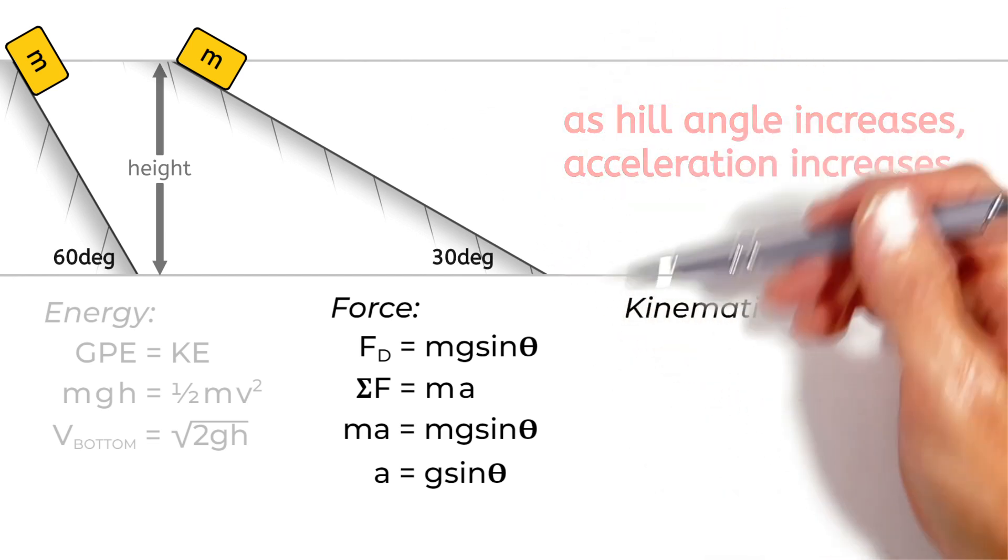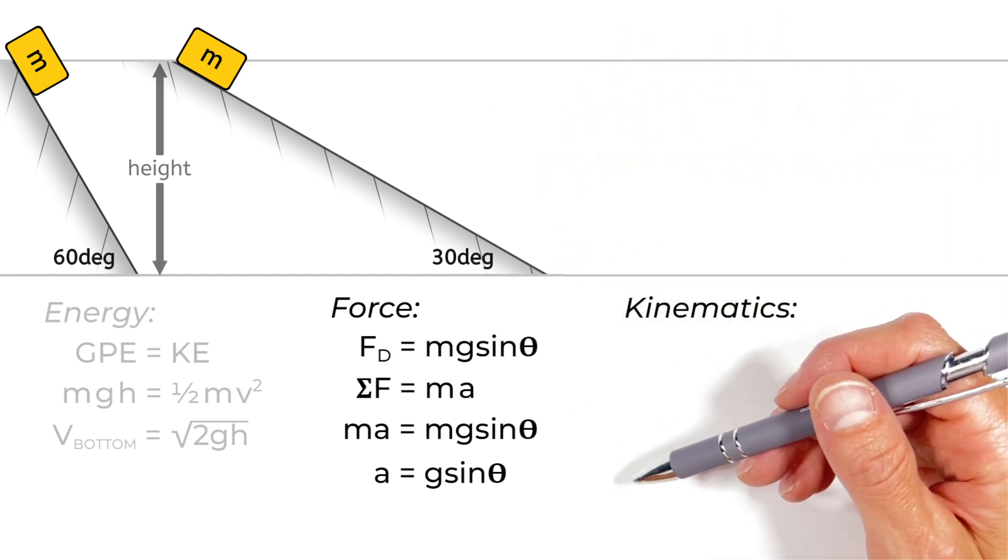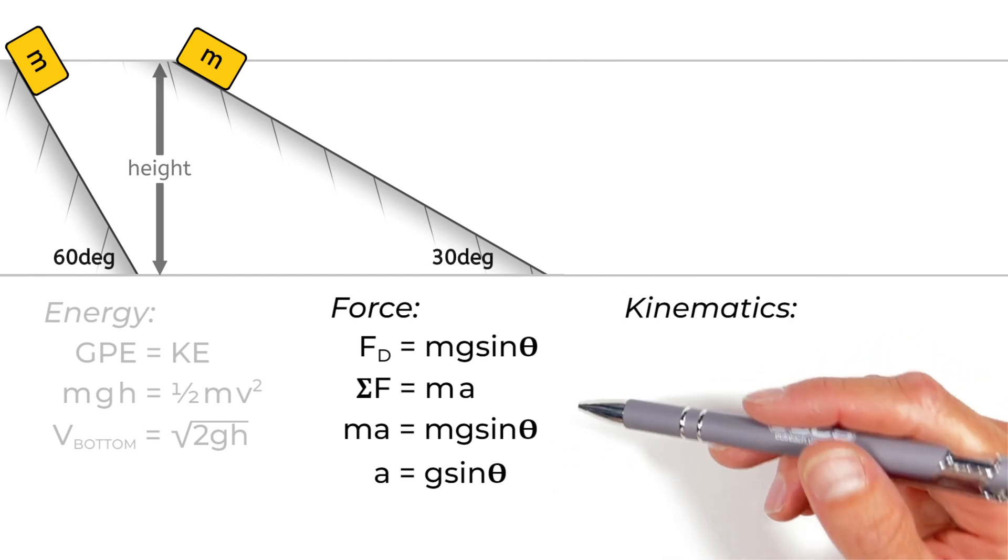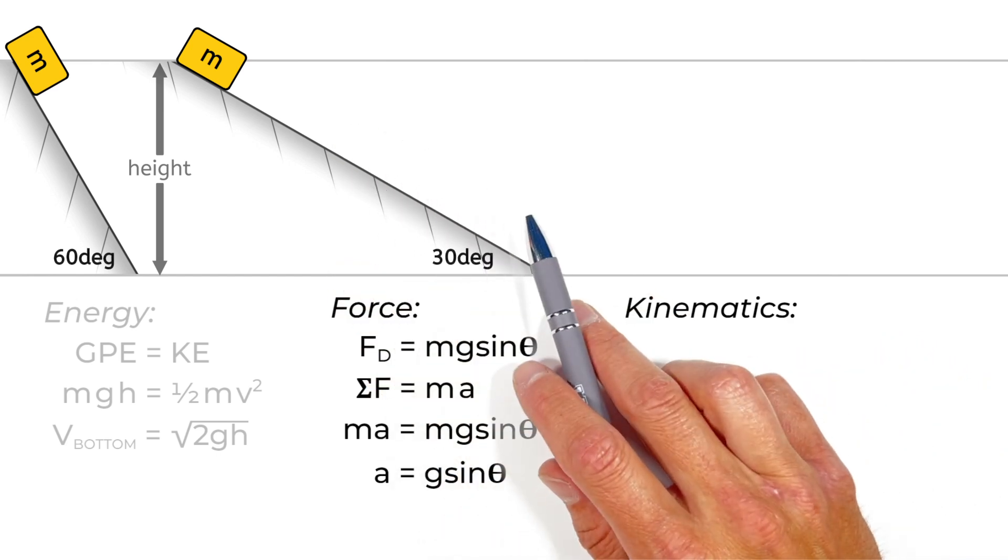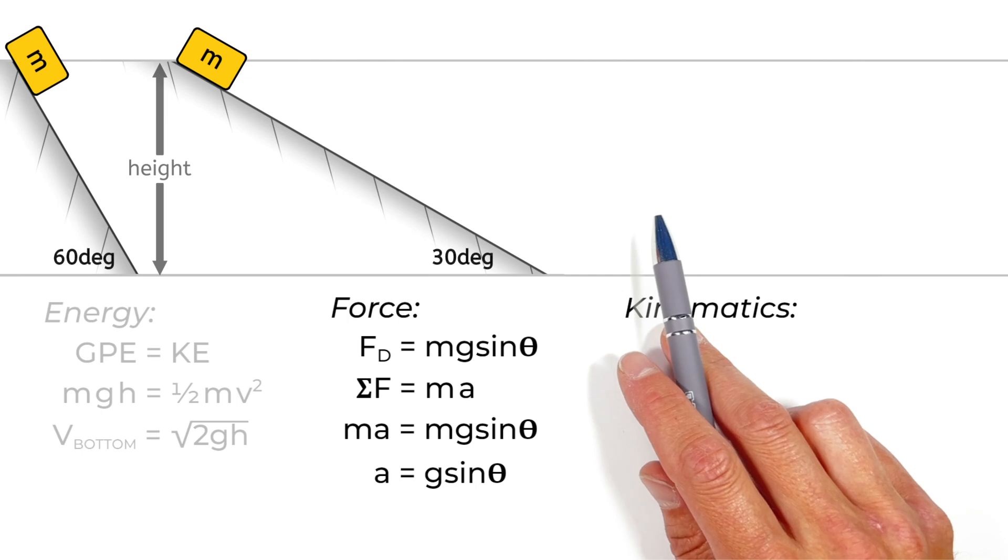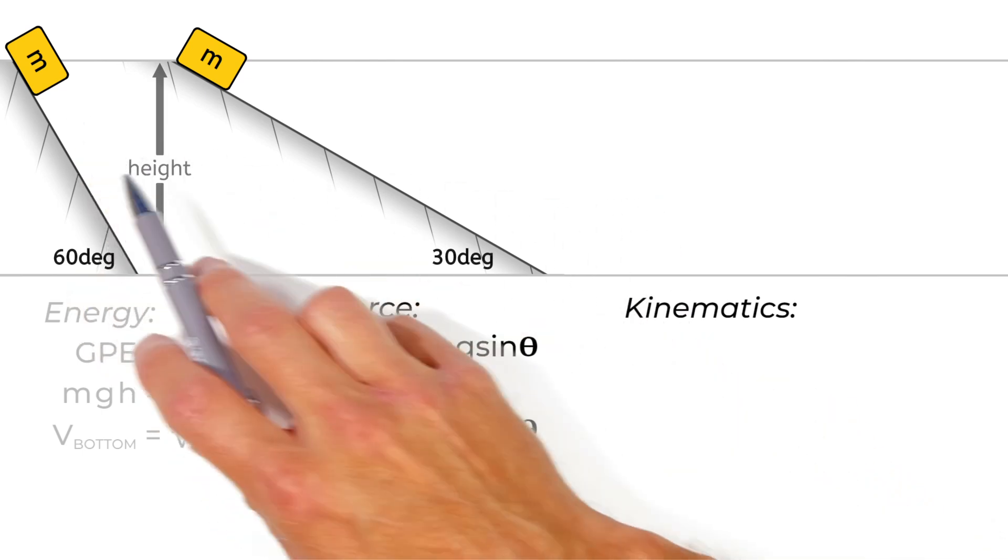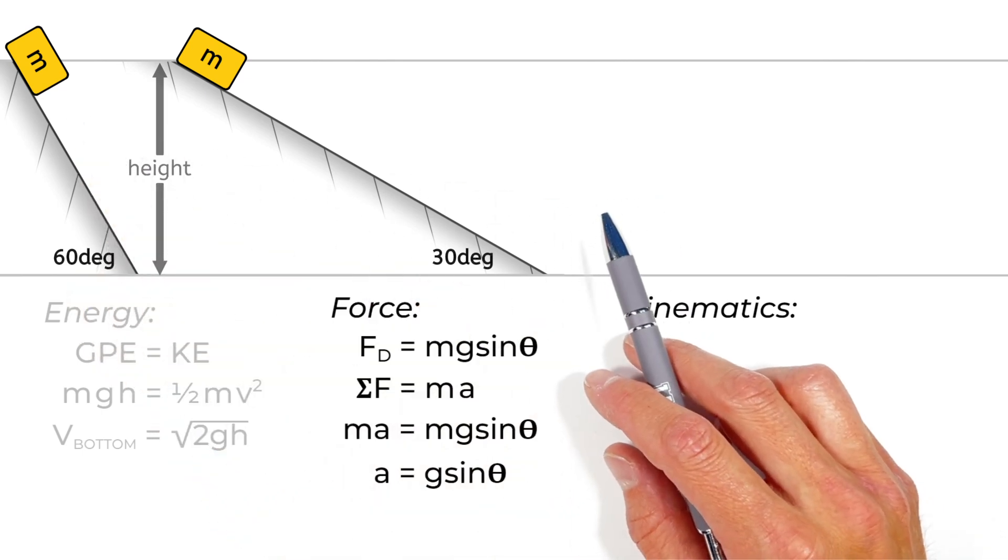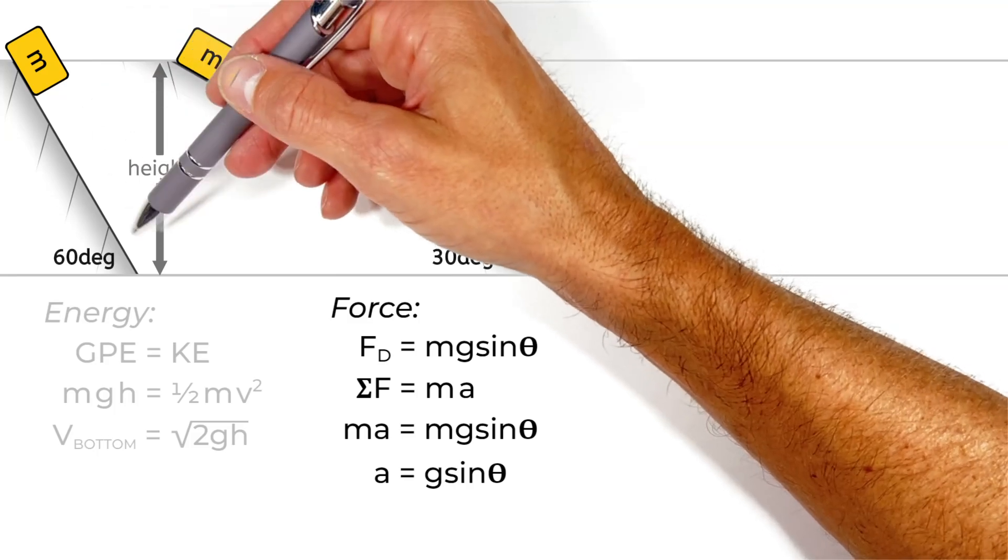As we make this hill steeper, yes, the rate of acceleration of the block is going to increase, but the length of the hill is going to decrease. You see, a real long gradual hill is, of course, long. There's going to be a large displacement of the block. Whereas a short steep hill is, of course, going to be shorter.